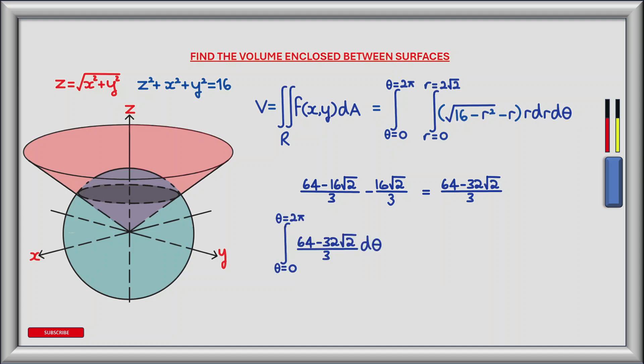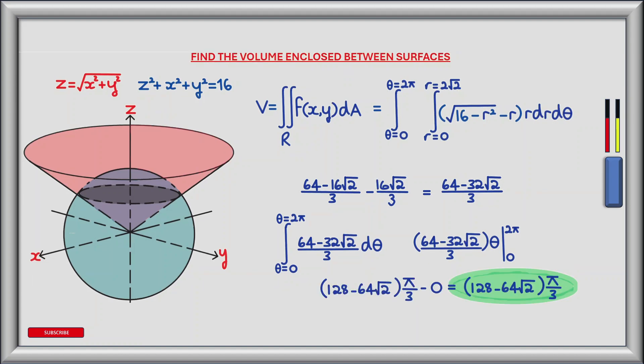For the outer integral we integrate between the limits of theta equals 0 and theta equals 2 pi. Using the power rule gives theta divided by 3 multiplied by the bracket of 64 minus 32 root 2. Evaluating between theta equals 0 and theta equals 2 pi gives our final answer of pi divided by 3, multiplied by 128 minus 64 multiplied by the square root of 2.